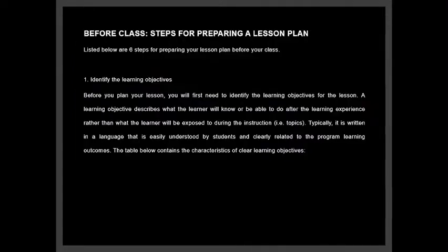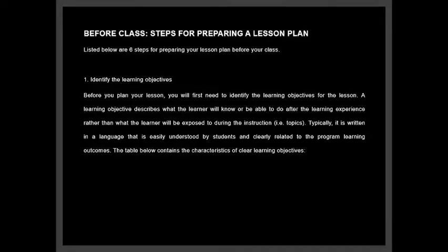There are six steps for preparing an effective lesson plan. The first step is to identify the learning objectives. Before you plan your lesson, you need to identify the learning objectives. A learning objective describes what learners will know or be able to do after the learning experience, rather than what they will be exposed to during instruction. It is typically written in language easily understood by students and clearly related to program learning outcomes.